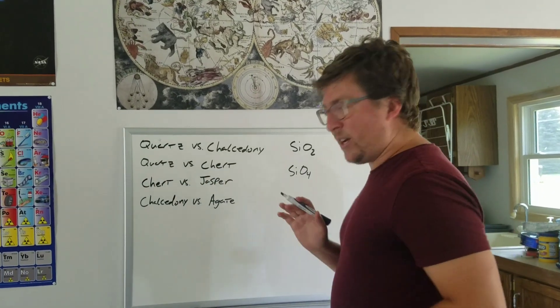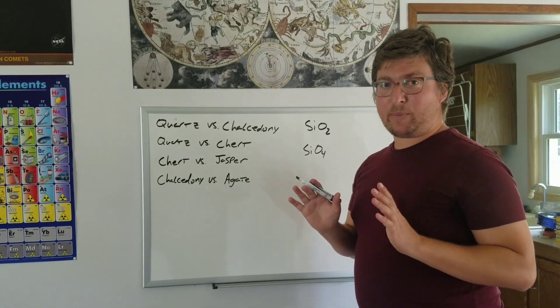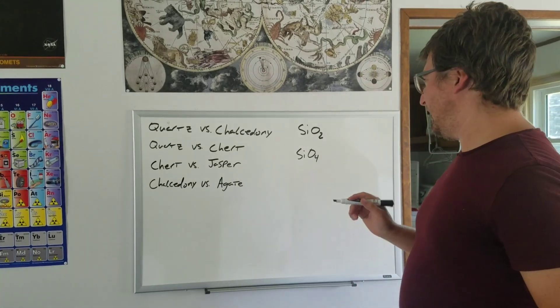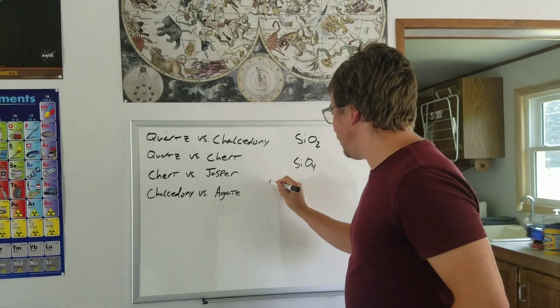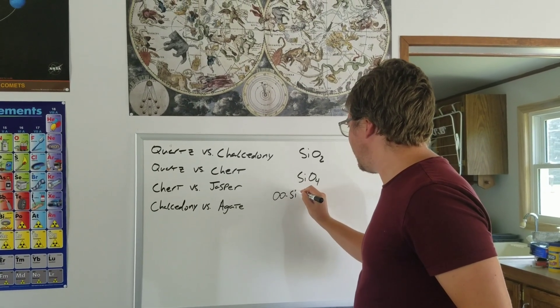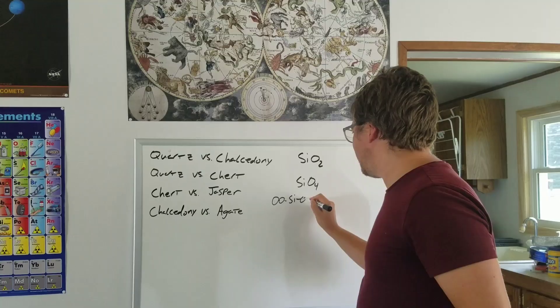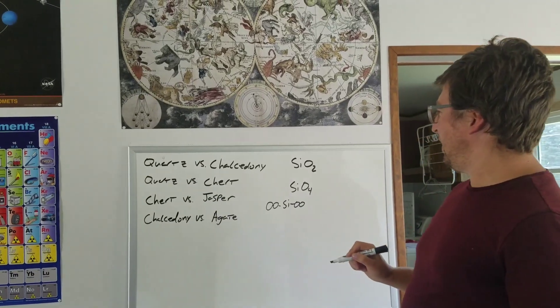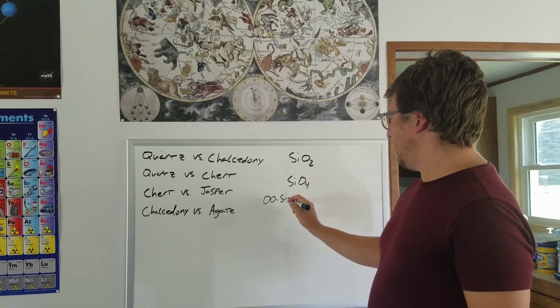What happens is you get chains of this stuff forming. A way to visualize it - this isn't literally what's happening with the crystal lattice, but a way to visualize it is you need two oxygens bound to a silicon on one set, and then two oxygens. That's four oxygens, one silicon, just like that.